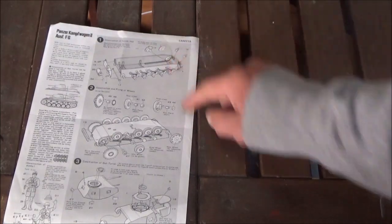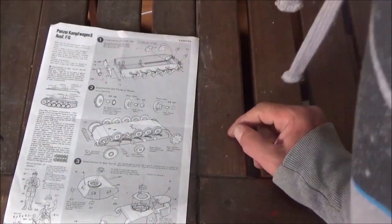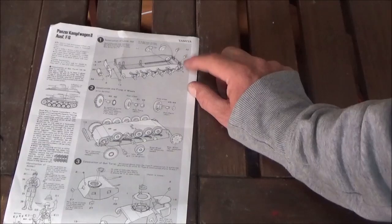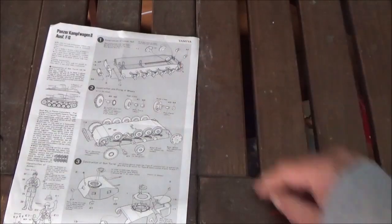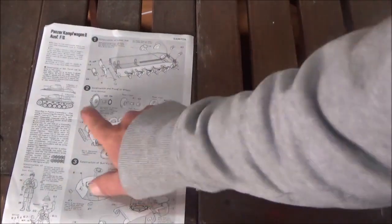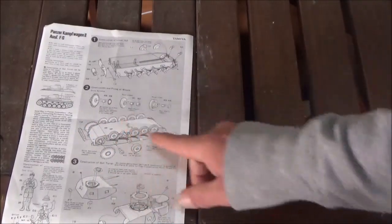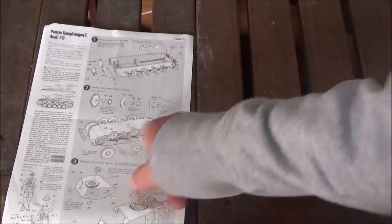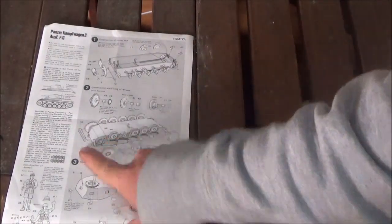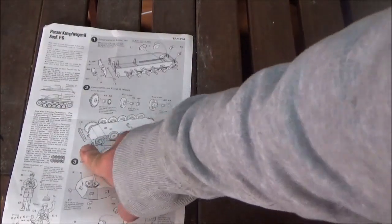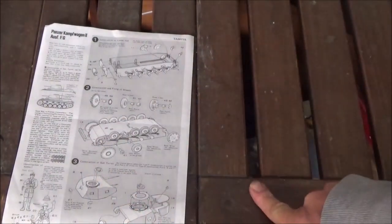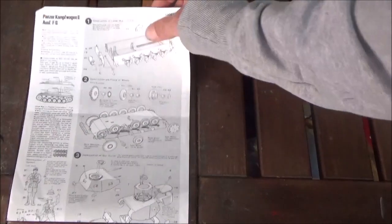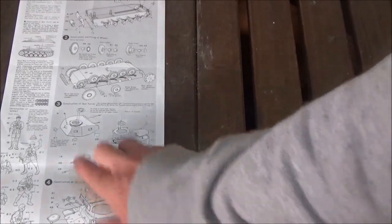Number two, you put the sprockets together, the road wheels together, the idler arms together, then you put them all on. You also have the extra track which is something I do last because of the painting.